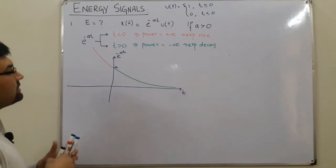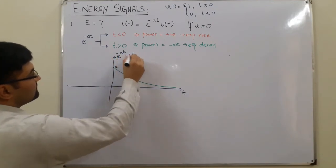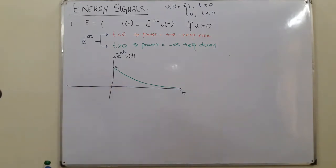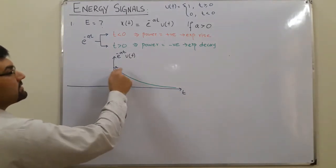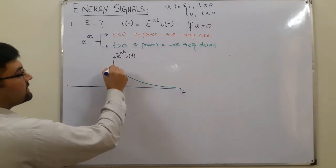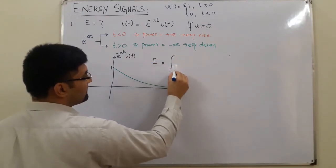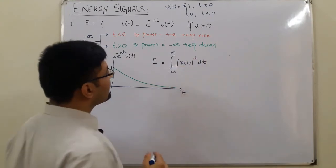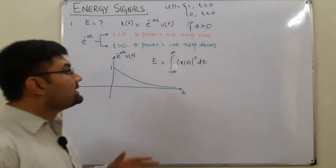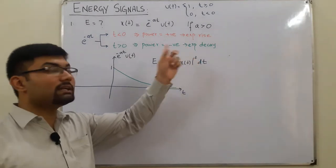The negative-time portion cancels out, so our signal is the exponential decay for t ≥ 0 only. This is now our question: find the total energy of this signal. The energy of a signal is given by integrating from negative infinity to positive infinity the modulus of x(t) squared with respect to t. You can also say the energy equals the area under the squared modulus of x(t) graph.